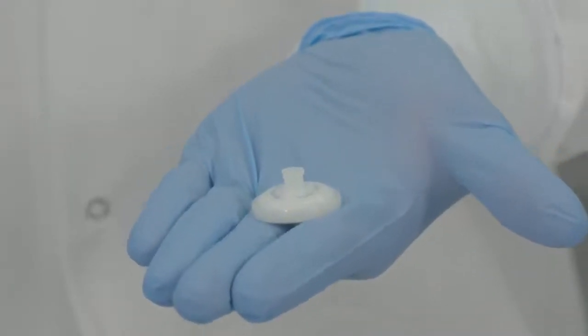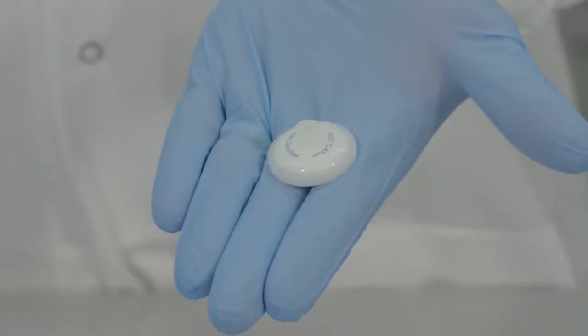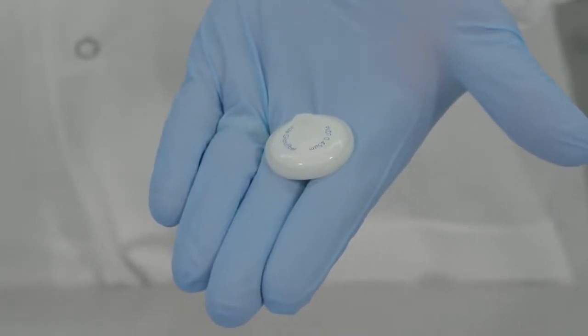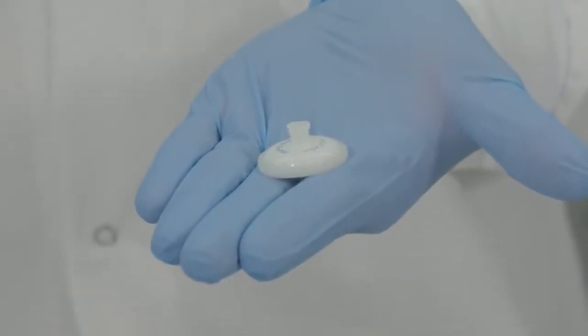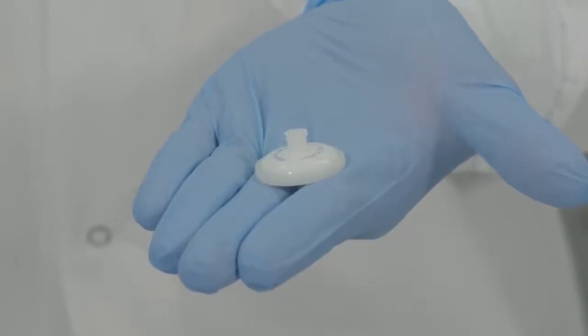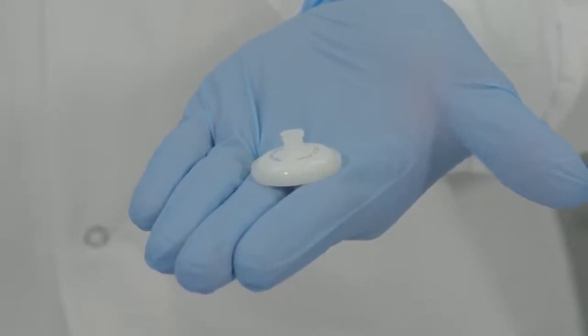For 25mm HPF syringe filter, the filter is asymmetric with a layer of pre-filter that is glass fiber and the final membrane. Sample needs to be filtered through the pre-filter followed by the membrane.